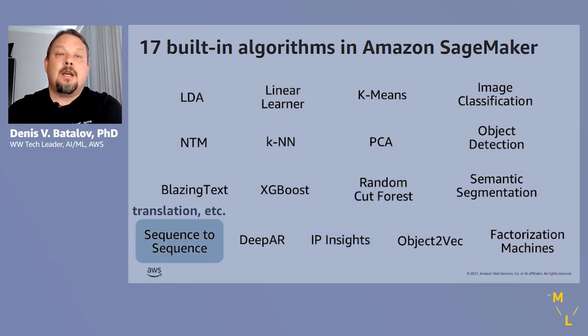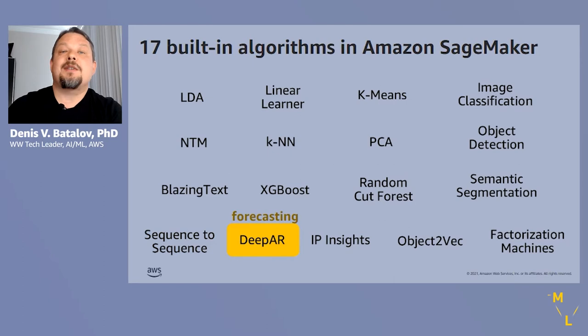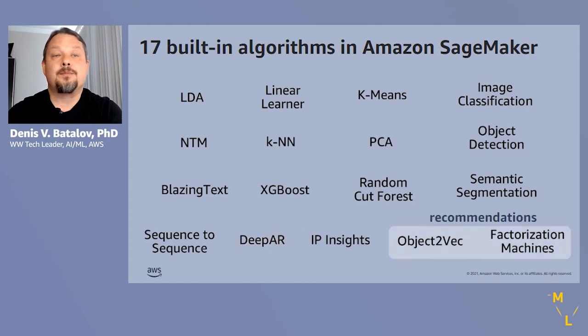When both the input and output of a model is a sequence of words or tokens, we call this a sequence-to-sequence algorithm, which is most frequently used for machine translation, but can even be applied to audio tokens. When the input sequence is a set of related time series, DeepAR is the Amazon published algorithm for forecasting problems. And finally, both Object2Vec and factorization machines are good candidates when you need to offer recommendations.